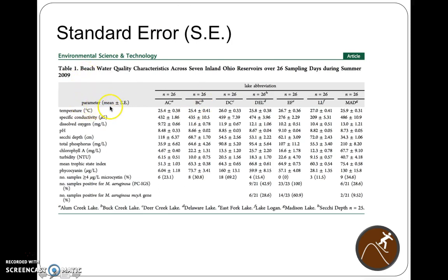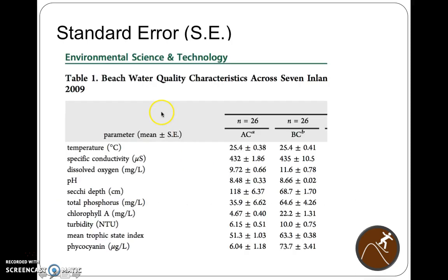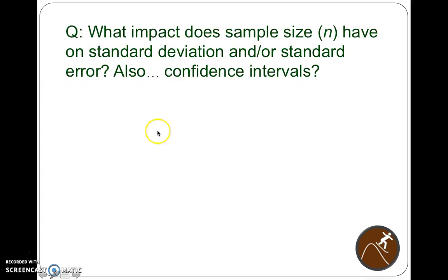Here's an example on water quality averages over 26 days. Here's the average temperature, I'll bring it closer, average temperature plus or minus the standard error. So 25.4 plus or minus 0.38. You'll see this in the scientific literature.